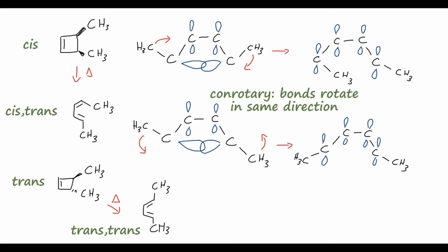You might be asking why the methyl groups cannot both rotate clockwise given this trans isomer — I'll leave that up to you to decide. A hint: it has to do with the steric hindrance of some of the groups positioned on this ring. We always want to try to avoid steric hindrance when possible.